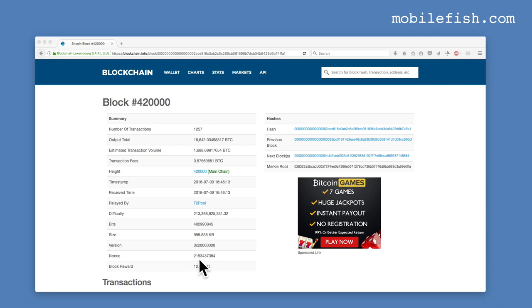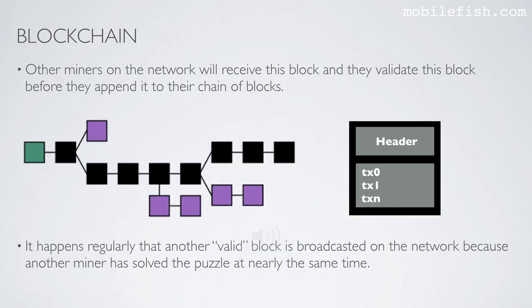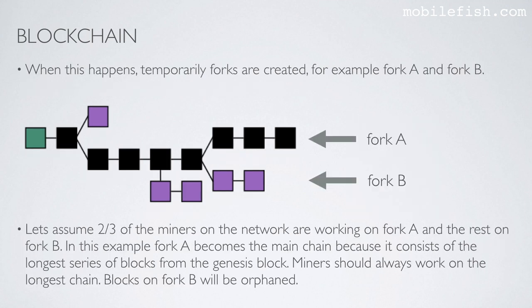In a later video I will explain more about the nonce. Other miners on the network will receive this block and they validate it before they append it to their chain of blocks. It happens regularly that another valid block is broadcasted on the network because another miner has solved the puzzle at nearly the same time. When this happens, temporary forks are created — for example fork A and fork B.